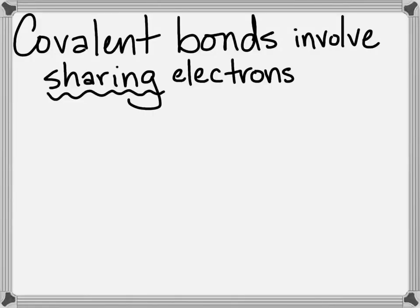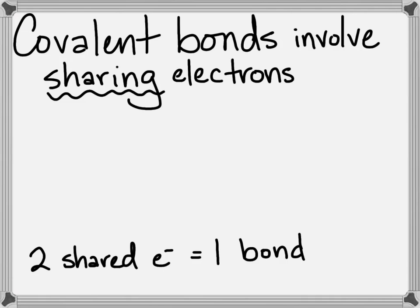Covalent bonds are stronger because instead of trading or giving away an electron, and then just having that attraction from the different charges bring the molecule together, covalent bonds involve sharing electrons. So, it takes two shared electrons to form one covalent bond.